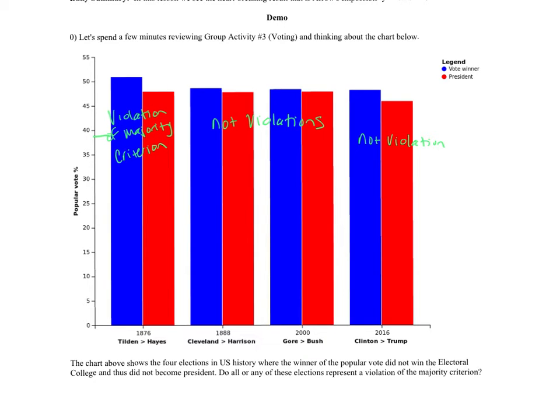That is the only time in U.S. history that a president won a majority of the votes — not just the most popular votes, but more than half of the votes — and lost in the electoral college.